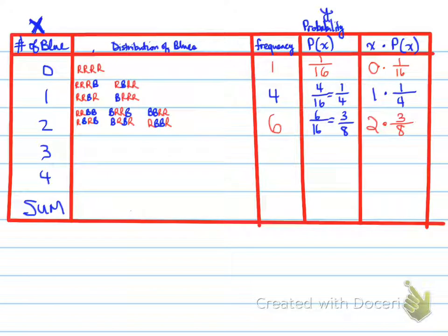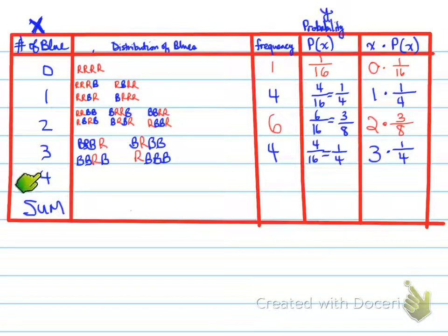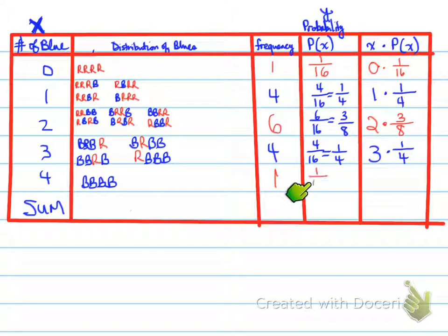For 3 blues, there are 4 possible combinations out of 16, giving P(x) = 4/16 = 1/4, and x times P(x) = 3 × 1/4. For 4 blues, the only possibility is blue/blue/blue/blue — just one occurrence, so P(x) = 1/16, and x times P(x) = 4 × 1/16.